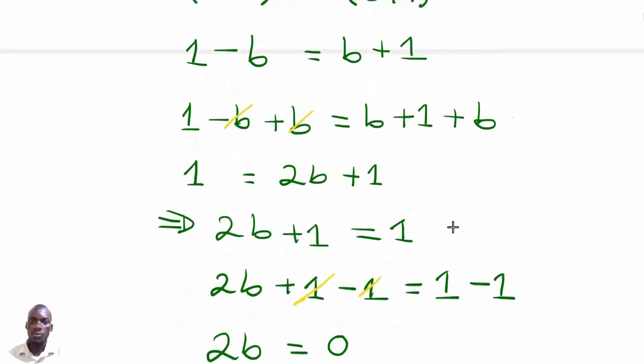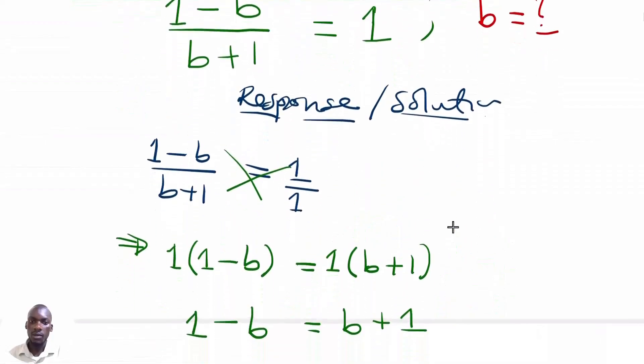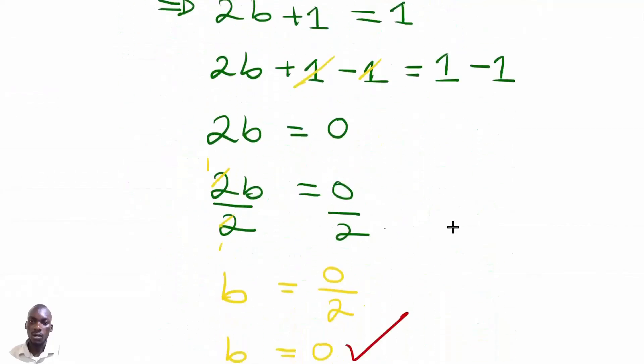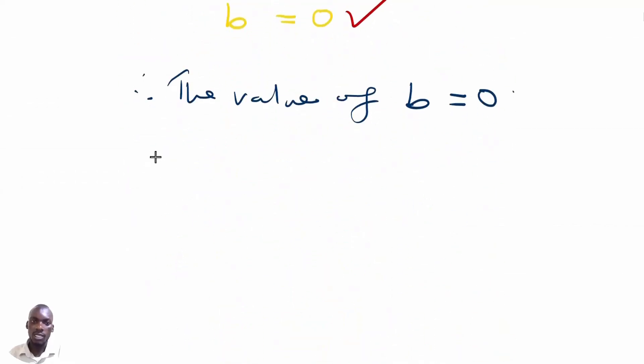So you can try to prove and see whether we are going to get the answer as 1. Remember, our expression is that 1 take away b divided by b plus 1 should be equal to 1. So we can now try to substitute in to prove whether b equals to 0.